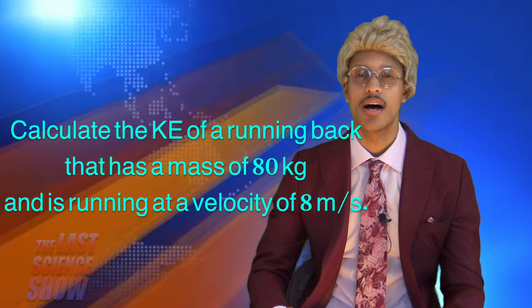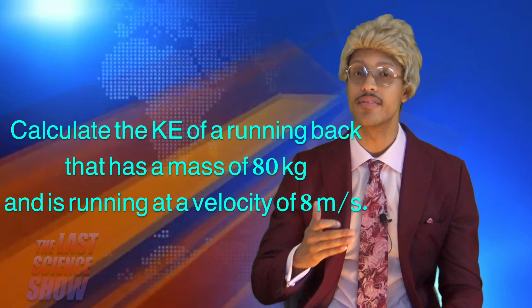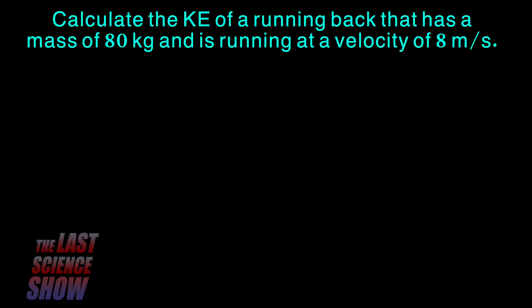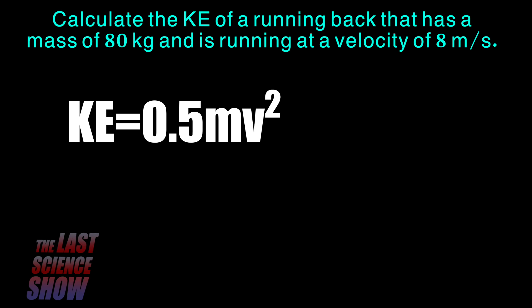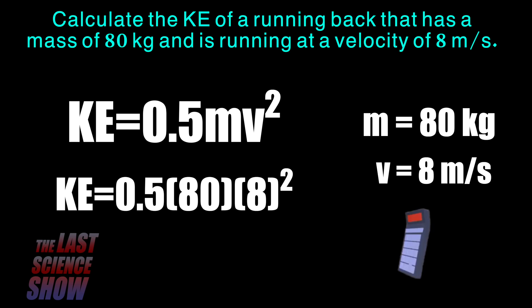Calculate the kinetic energy of a running back that has a mass of 80 kilograms and is running at a velocity of 8 meters per second. We need our formula: kinetic energy equals one-half times mass times velocity squared. Plug 80 kilograms into m for mass and 8 into v for velocity. Once you calculate it correctly, you'll have your answer.